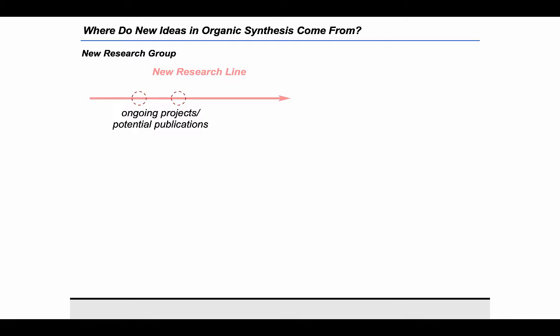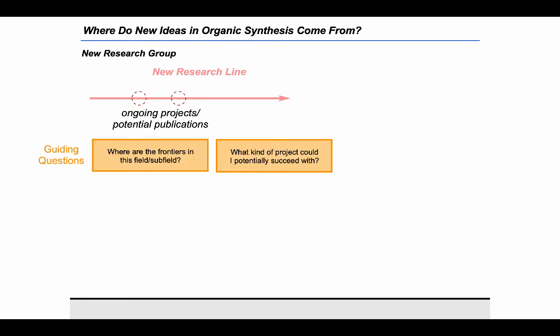Some important guiding questions to ask yourself include: where are the frontiers in this field or subfield? This may be more obvious in a larger research group where experienced members can identify what's been studied and what hasn't. Another question is: what kind of project could I potentially succeed with? Should I work on something completely new or something more closely related to what's already known? Choosing a sure thing isn't necessarily the best way to guarantee a high-impact publication, so you may have to decide whether to take a risk in an unexplored area.